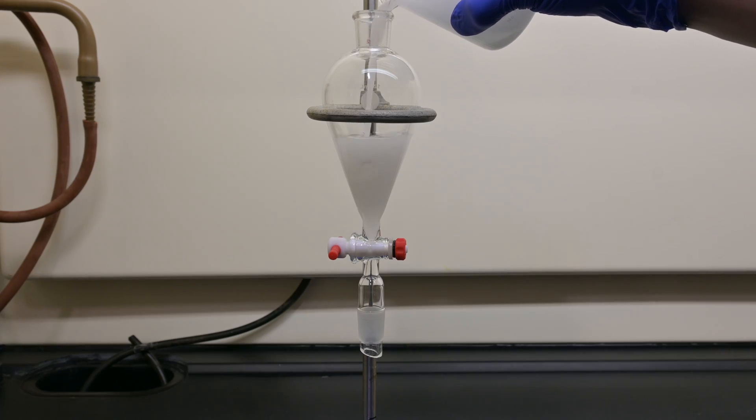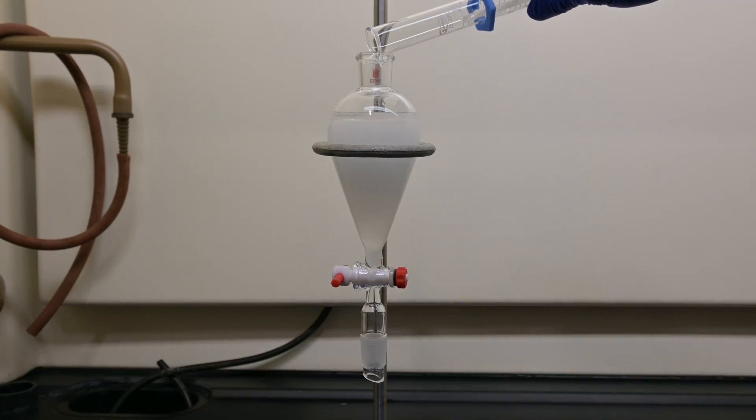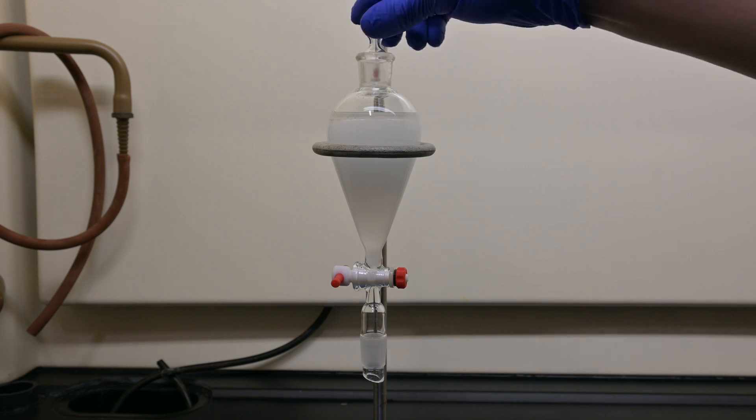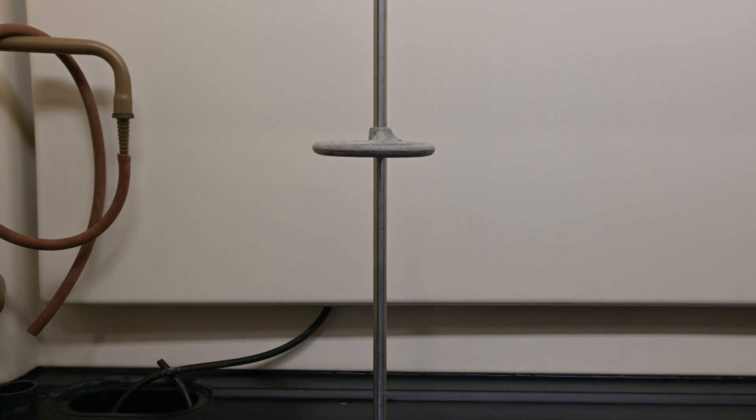Next, we transfer the solution to a separatory funnel and add 20 milliliters of dichloromethane. The dichloromethane will dissolve our aniline. We repeat the extraction two times. Shake, vent, repeat. Shake, vent, repeat.